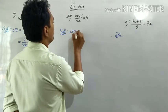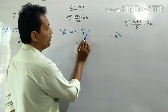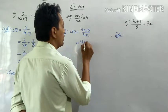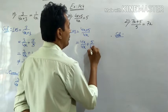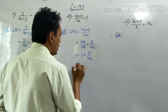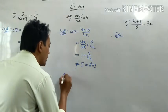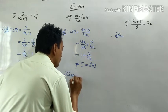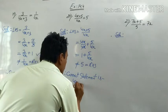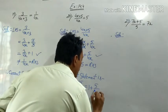Again we have the LHS which is equal to 4x plus 5 upon 4x. This can be simplified — the numerator 4x belongs to both the terms in the numerator. This is not equal to the right hand side. So the correct statement is: 4x plus 5 upon 4x is equal to 1 plus 5 upon 4x.